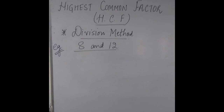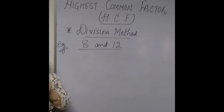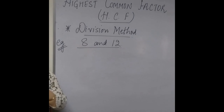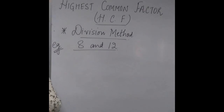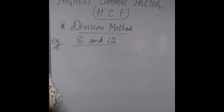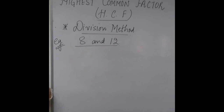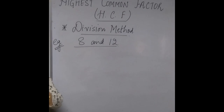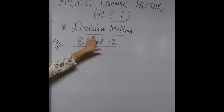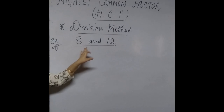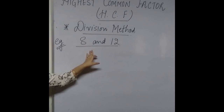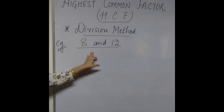Now children, in the last two examples we found the HCF of two and three given numbers using the factor method. Now there is another method by which we can find the Highest Common Factor — that method is called the division method. Now we will learn how to find the HCF of two or more numbers using the division method.